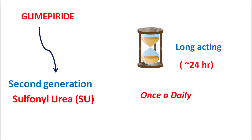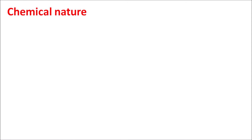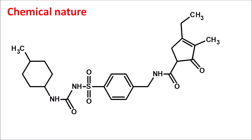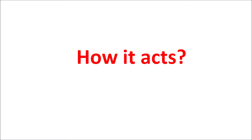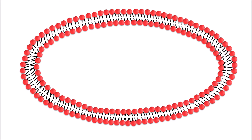First of all, let us see the chemical nature of this drug. This is the structure of glimepiride — here we can observe a sulfonylurea which is attached to the phenyl ring, so it is a phenyl sulfonylurea. Now let us see how this drug acts. Glimepiride acts on the beta cells of the pancreas.